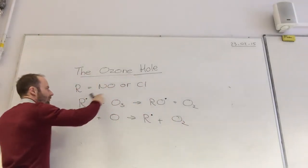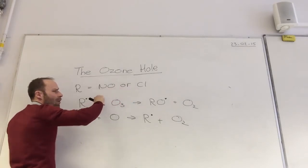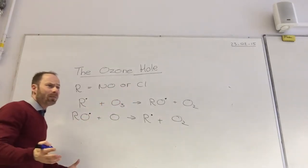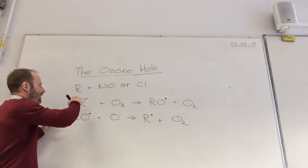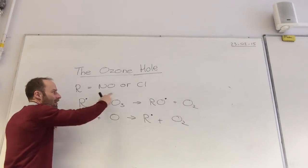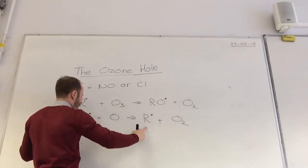So R is either NO or Cl. Whatever they give you. So sometimes they give you some random thing and say, well, how does this break down ozone? Just replace. If you've learned this one, can you just replace for Cl. Just put Cl, Cl, Cl, Cl there.